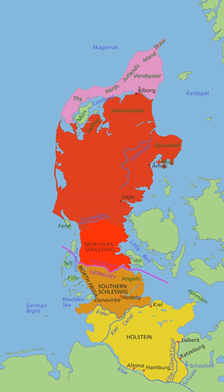Jutland, also known as the Cimbric or Cimbrian Peninsula (Danish: Den Kimbriske Halvø; German: Kimbriske Halbinsel), is a peninsula of northern Europe that forms the continental portion of Denmark and part of northern Germany. The names are derived from the Jutes and the Cimbri, respectively. Jutland's terrain is relatively flat, with open lands, heaths, plains and peat bogs in the west and a more elevated and slightly hilly terrain in the east.